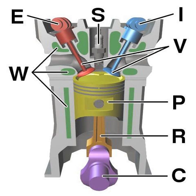In an internal combustion engine, the expansion of the high temperature and high pressure gases produced by combustion applies direct force to some component of the engine. The force is applied typically to pistons, turbine blades, rotor or a nozzle. This force moves the component over a distance, transforming chemical energy into useful mechanical energy.